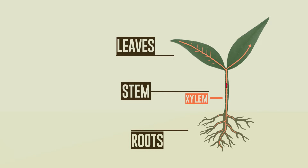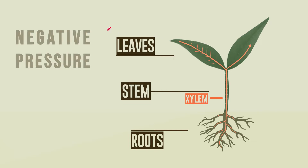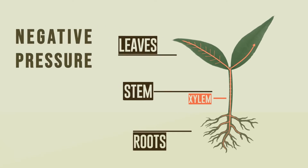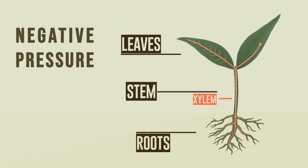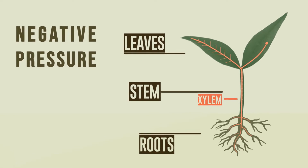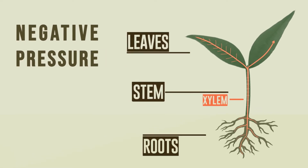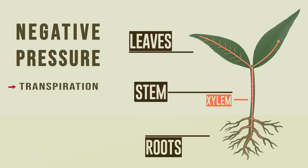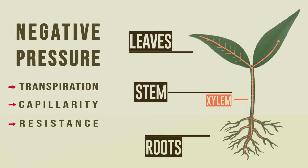Under most conditions, xylem sap is transported under negative pressure. Important phenomena that contribute to the negative pressure include transpiration, capillarity, and resistance.